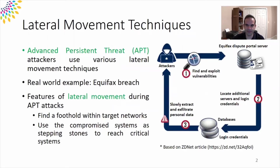APT attackers use various lateral movement techniques to gradually expand their access within enterprise networks, so they can access critical assets buried deep inside compromised networks. A real example of such an attack is the Equifax breach in 2017, attributed to APT 10. In such attacks, the attackers first try to find a foothold within the target network, typically by exploiting a public server or sending spear phishing emails to employees. Then they use this system to compromise neighboring systems, repeating this process until they reach critical assets.